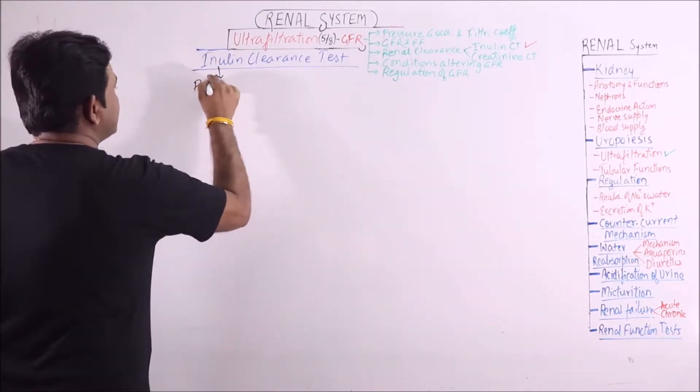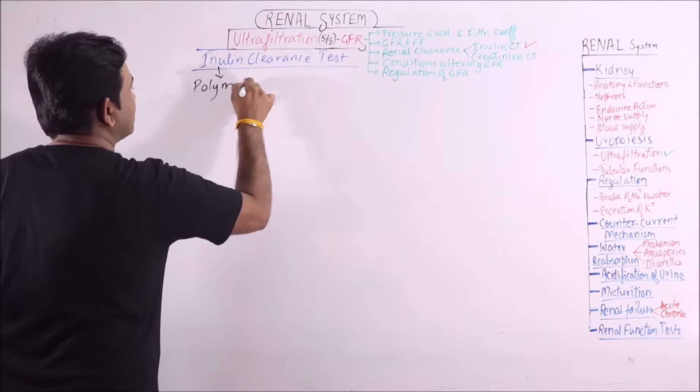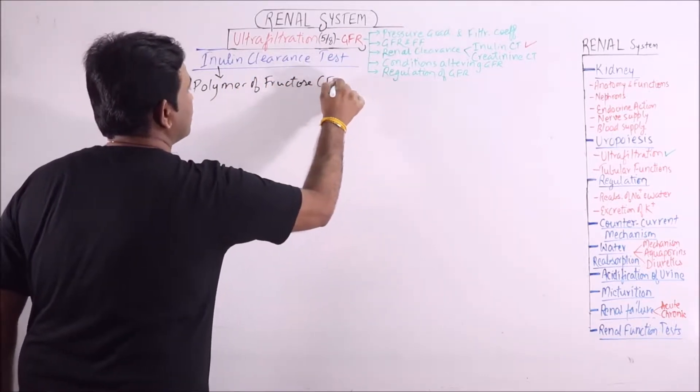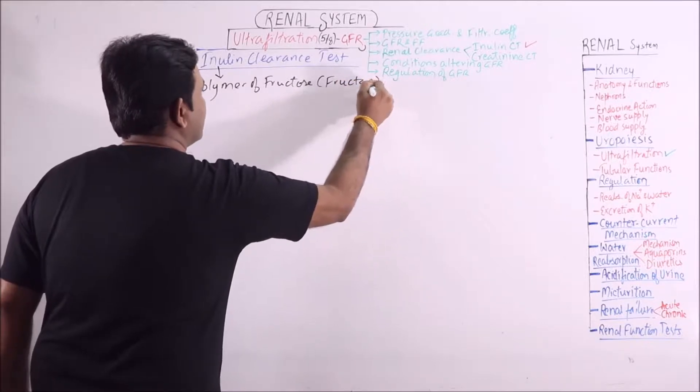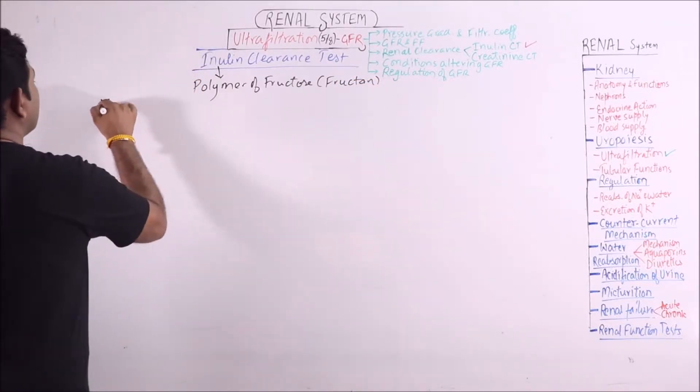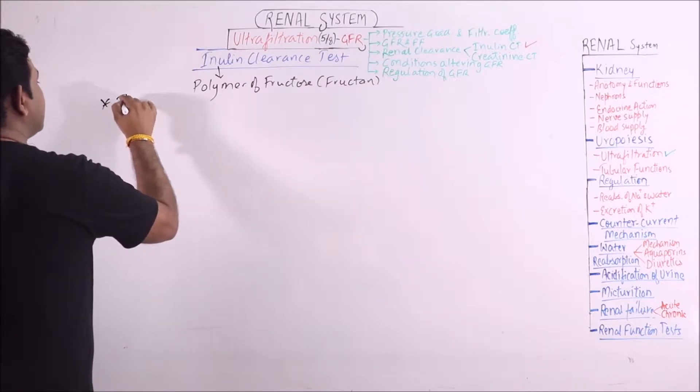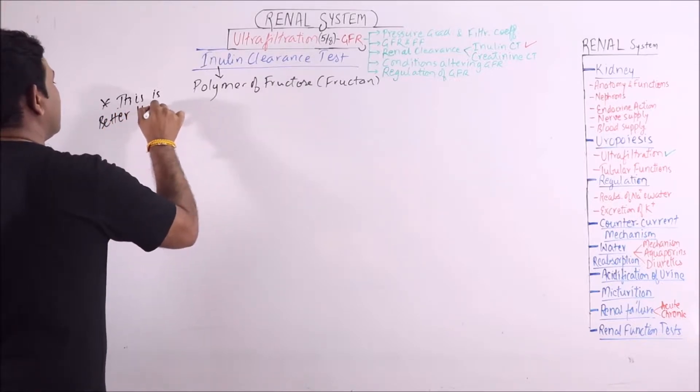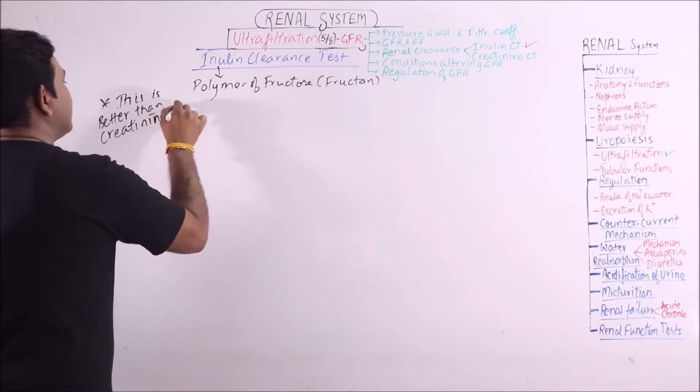Inulin is a polymer of fructose, so it is a fructan. This test is better than creatinine clearance test.